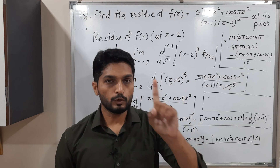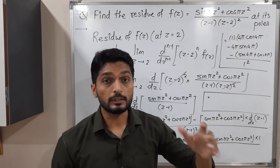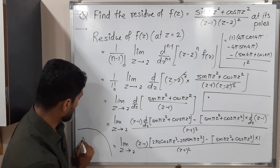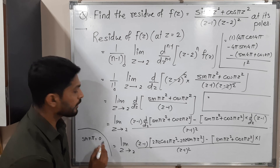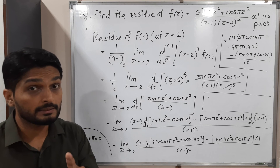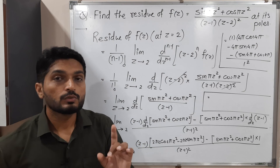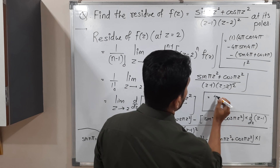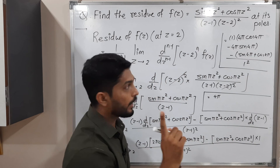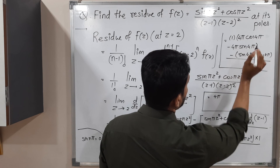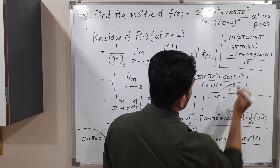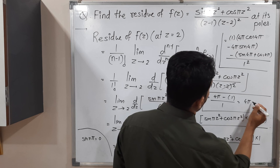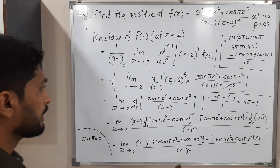Now simplifying: cos(4π) = 1 and sin(4π) = 0, because sin(nπ) = 0 for any integer n — so sin(2π), sin(3π), sin(4π), sin(5π) are all 0. Applying these values: 1 · [4π · cos(4π) − 4π · sin(4π)] − [sin(4π) + cos(4π)] · 1, divided by 1. This becomes 1 · [4π·1 − 4π·0] − [0 + 1] = 4π − 1. So the residue at z=2 is 4π − 1.